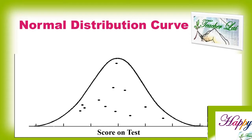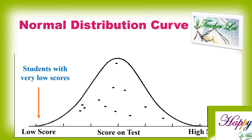Let us assume that your teacher gave you an achievement test in the form of a pre-test and post-test. To know the dispersion of the raw scores from students with very low scores to students with very high scores, standard deviation is very helpful.